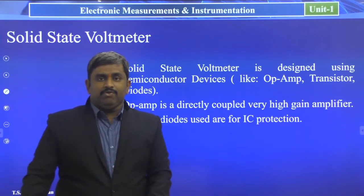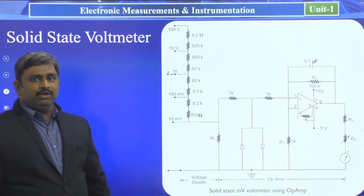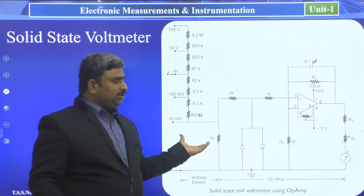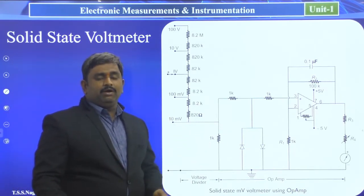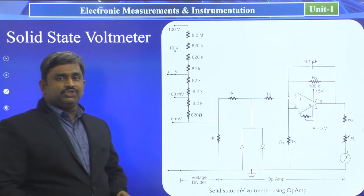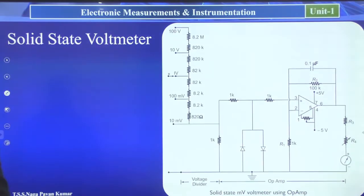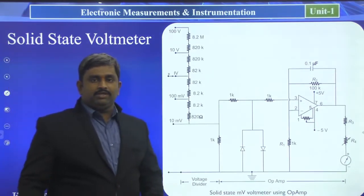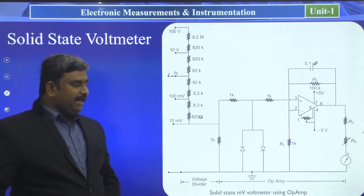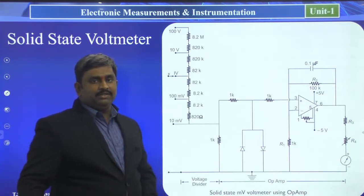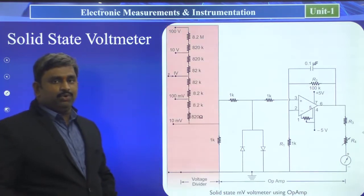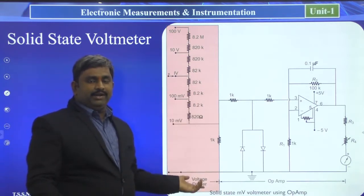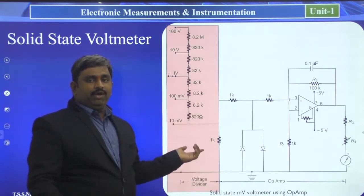Now we will see the circuit diagram of the solid state voltmeter. This complete circuit diagram is divided into two categories. The first part is a voltage divider network, where we can select multiple voltage ranges.